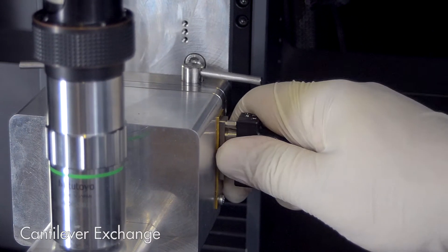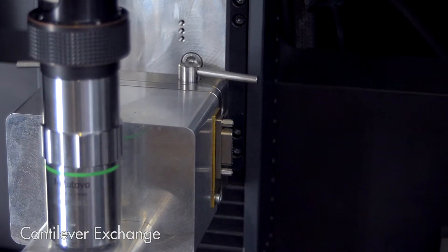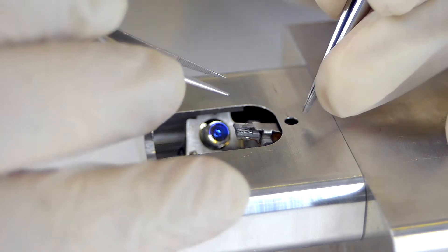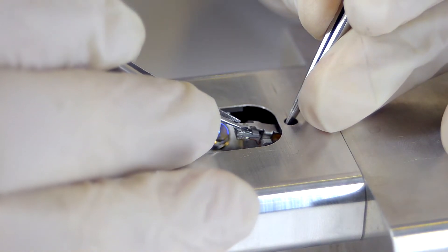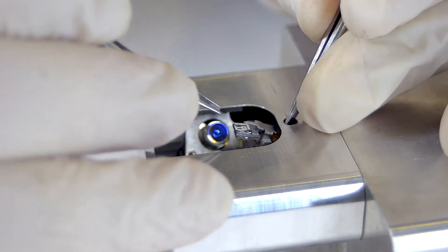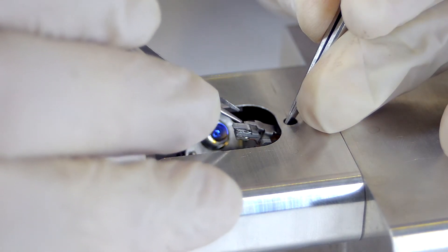In order to change the cantilever, remove the cable from the AFM head. Release the locking mechanism and remove the AFM head. Using tweezers, push the spring-loaded fulcrum mechanism to release the cantilever. Remove the old cantilever and place a new one on the alignment chip and release the fulcrum.